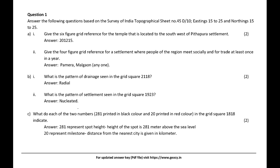What do each of the two numbers — 281 printed in black color and 20 printed in red color — in the grid square 1818 indicate? Answer: 281 represents spot height; the height of the spot is 281 meters above sea level. 20 represents a milestone; the distance from the nearest city is given in kilometers.